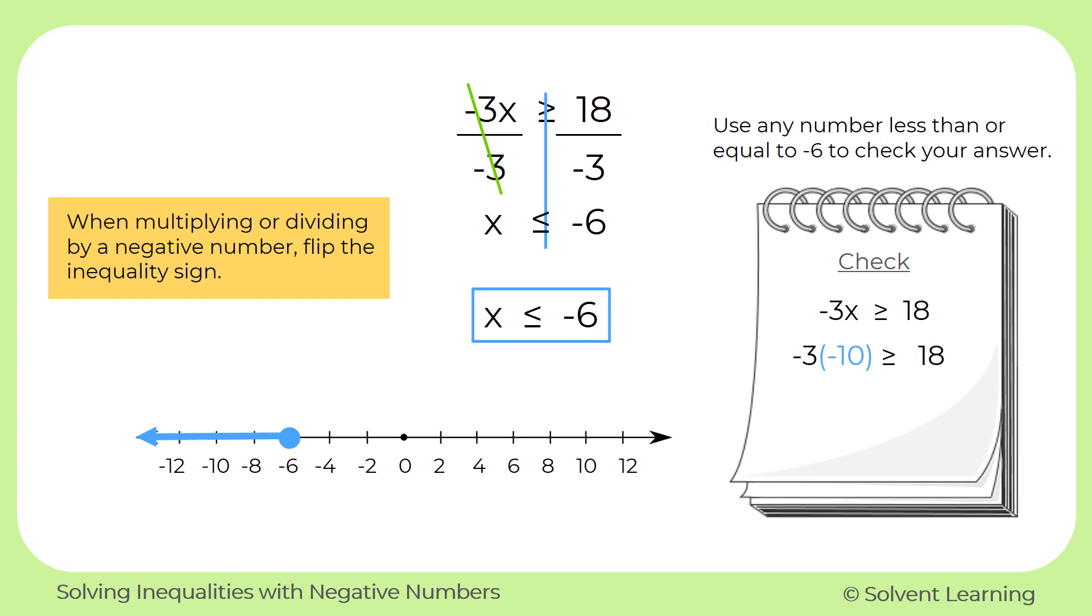By simplifying the left side, negative 3 times negative 10 gives me positive 30. So now I have 30 is greater than or equal to 18, which is true. So now I know I do have the correct inequality symbol.